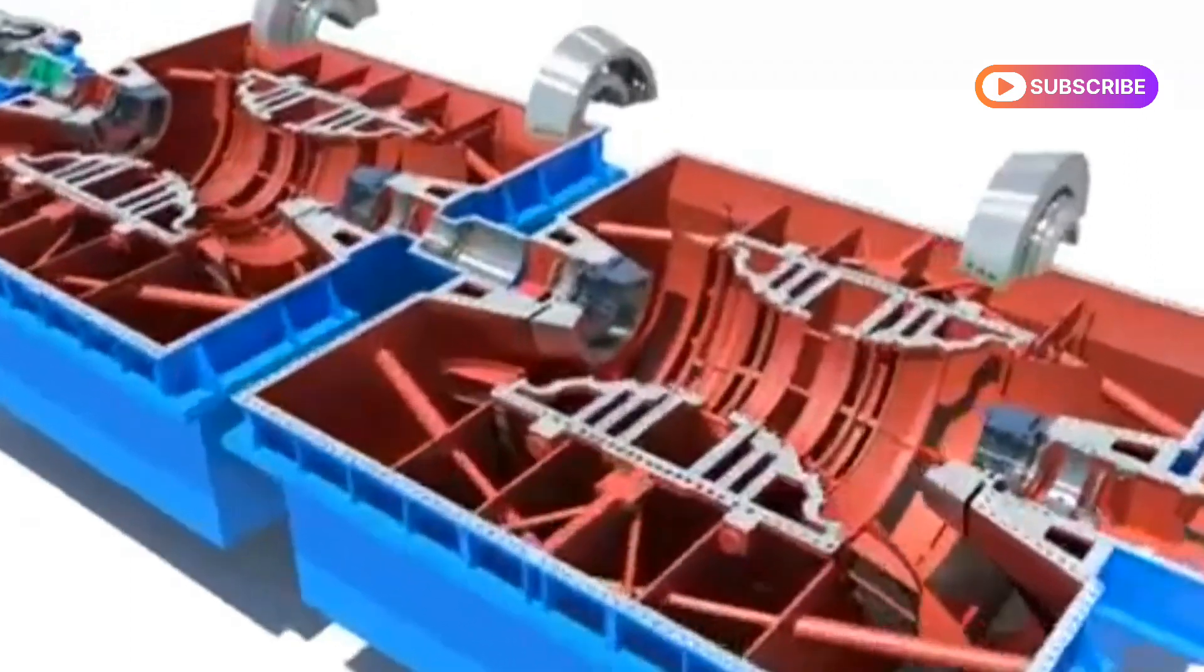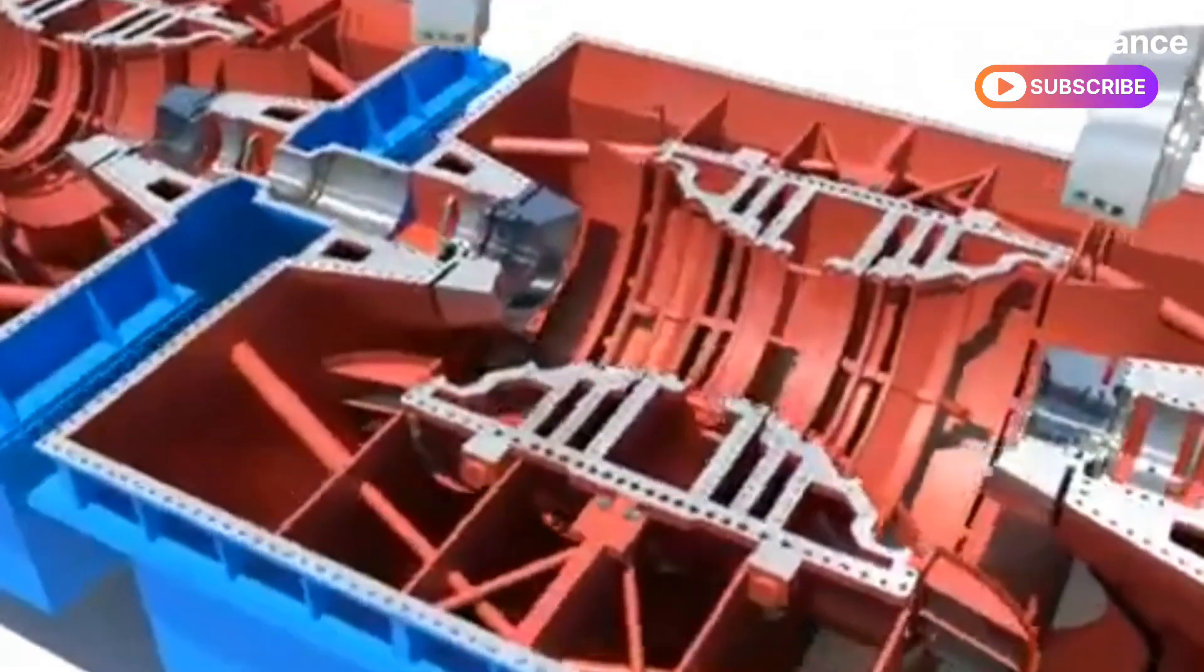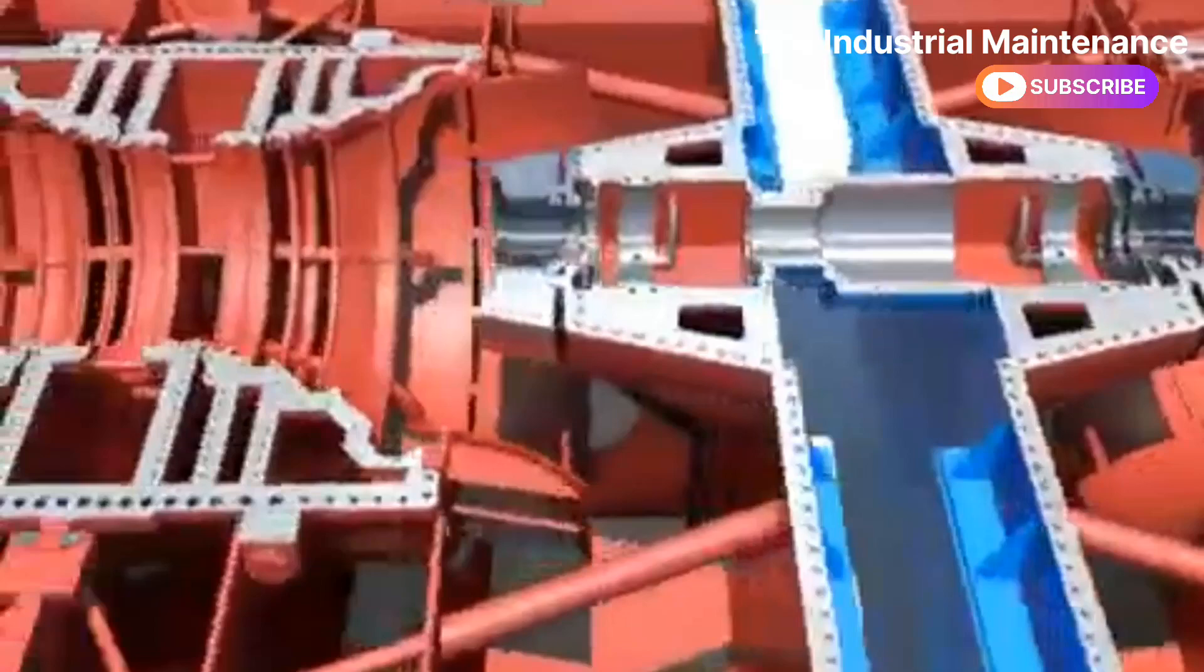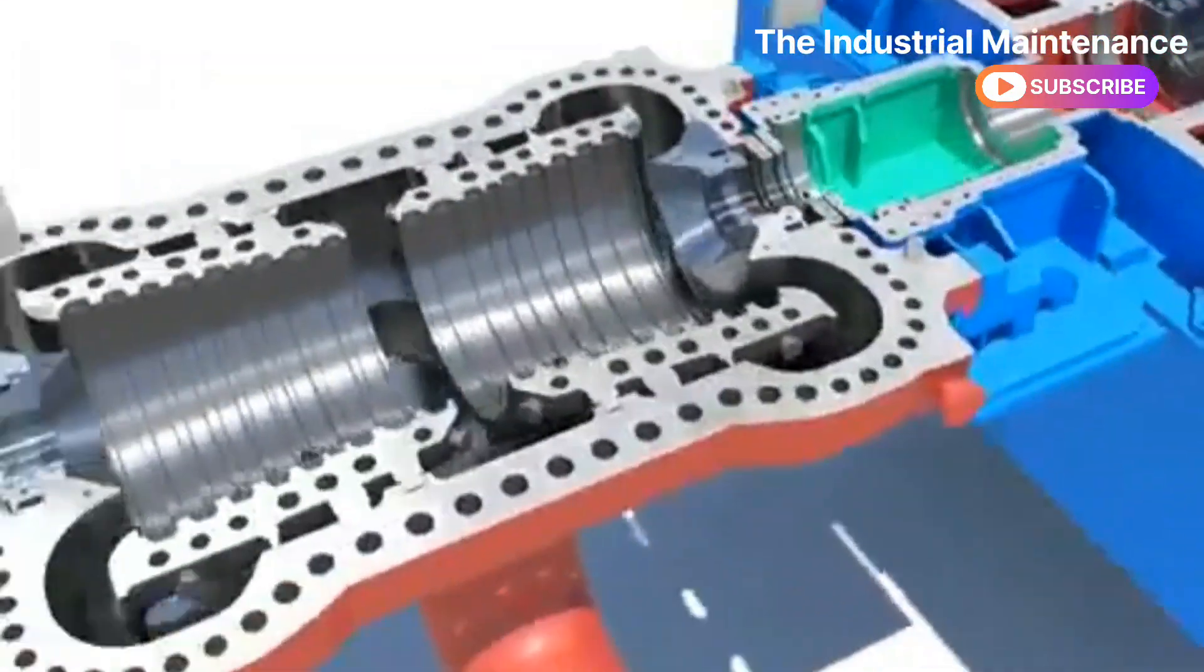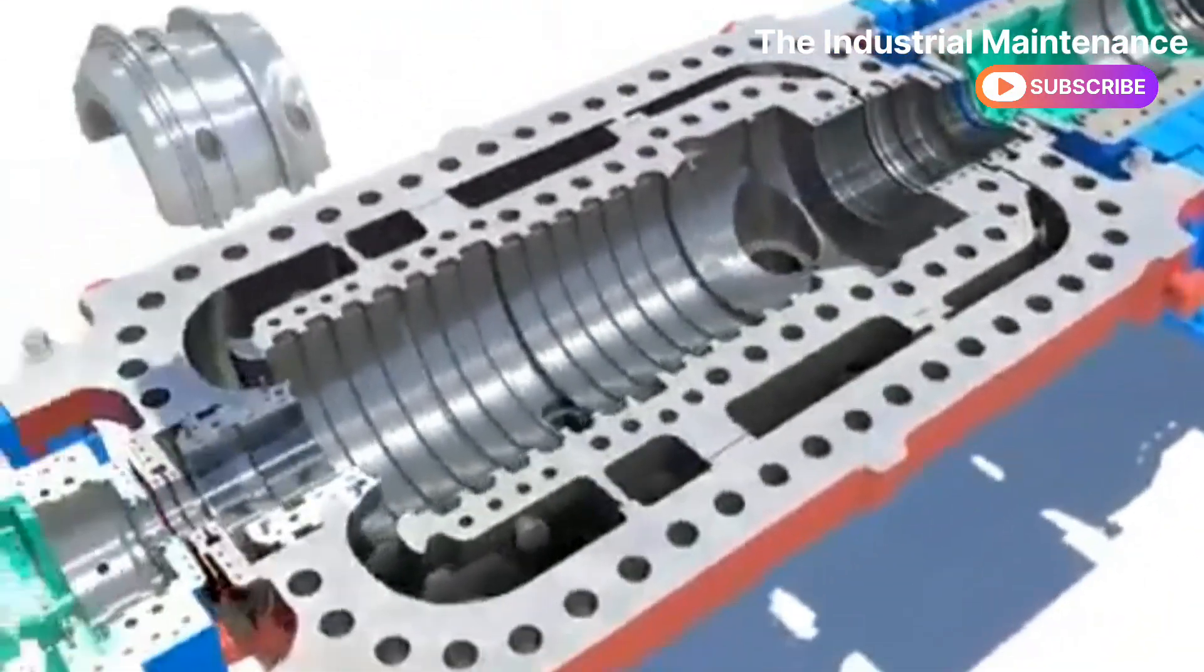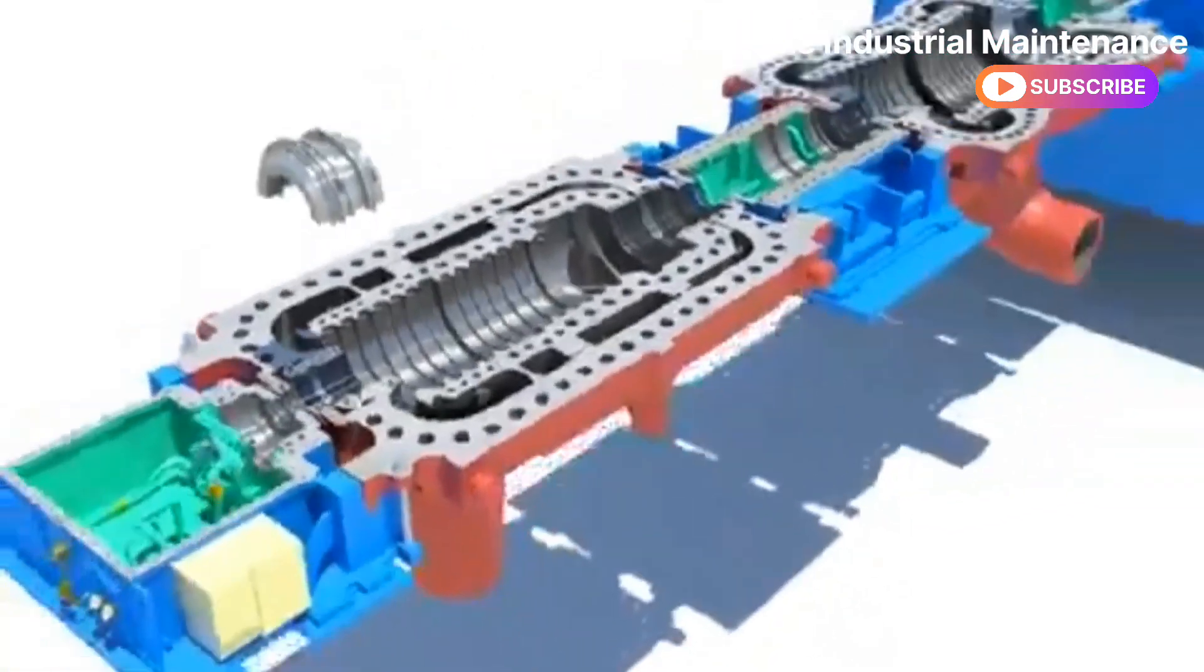The gland packing is an equipment which is installed at each end of the HP turbine, IP turbine, and LP turbine to prevent steam leakage between the end of the turbine and rotor.